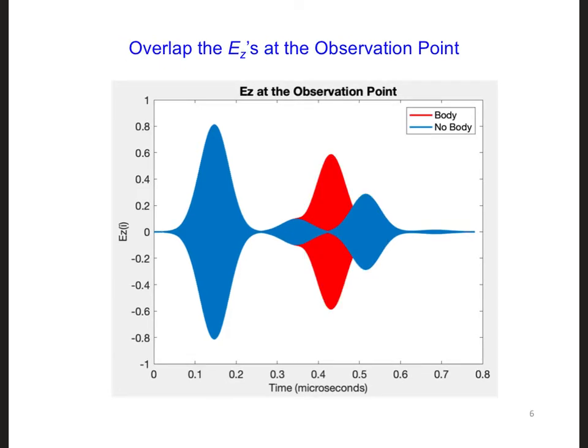If we overlap the sampled electric field at the observation point when the body is included versus not included, we can directly compare the reflections. Here we can clearly see the reflection generated by the body.